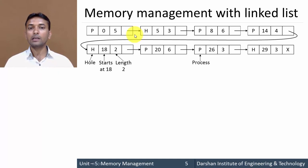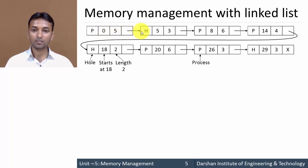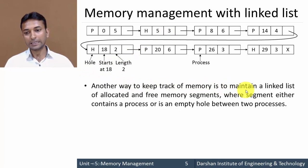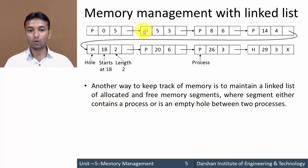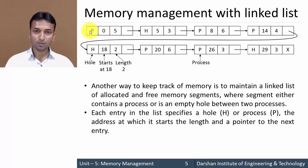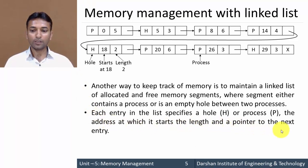The second technique is memory management with a linked list. The structure looks like this: P, then 0, then 5, then a pointer to the next node; then H (hole), then P (process), starting address 5, then 3. The other way to keep track of memory is to maintain a linked list of allocated as well as free memory segments, where a segment either contains a process (P) or an empty hole between two processes (H). Each entry in the list specifies whether it is a hole or a process, the address at which it starts, the length, and the pointer to the next entry.